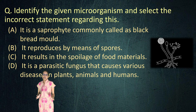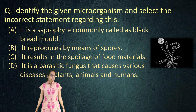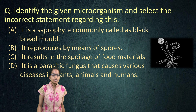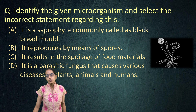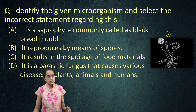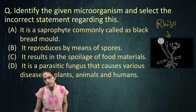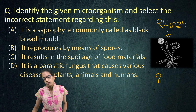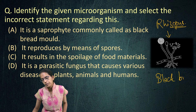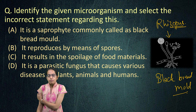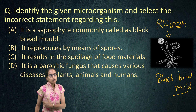Understand the cell classification and the various organelles carefully and you are all set with these kinds of questions. Now, this is another question where you have to identify this organism. This microorganism is what is known as Rhizopus, or what is commonly known as black bread mold.